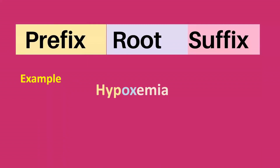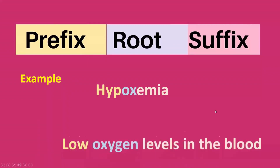Example: Hypoxemia. Hypoxemia means low oxygen levels in the blood. Hypo refers to low, oxy for oxygen, and emia means in the blood.